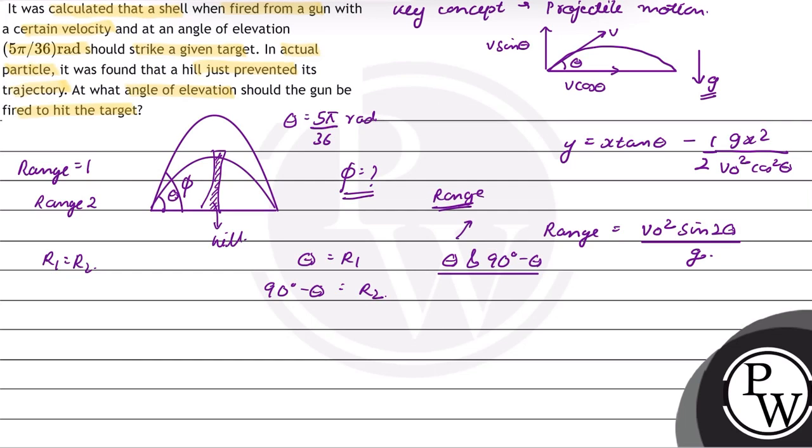Therefore, the angle of elevation is equal to 90 degrees minus theta, or this can be written as π by 2 minus 5π by 36 radian, which equals 13π by 36 radian.